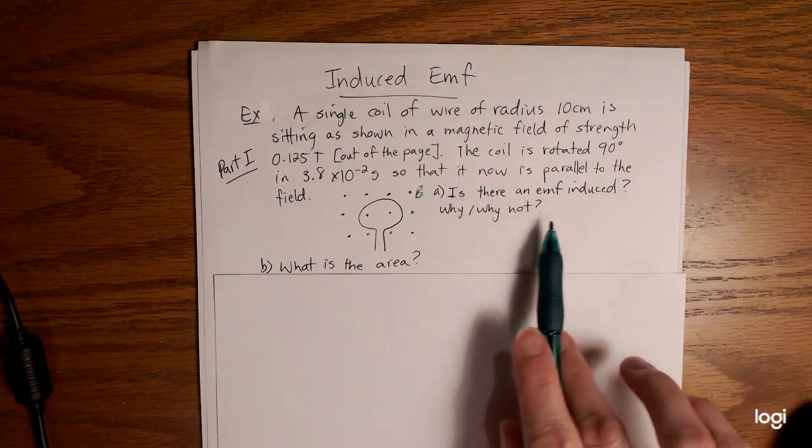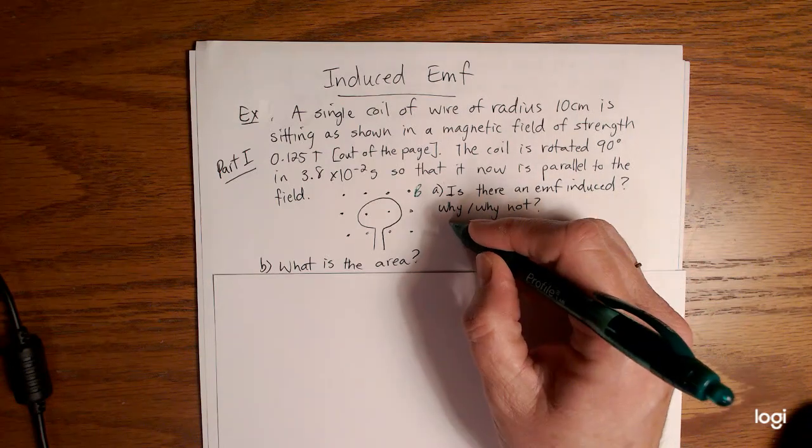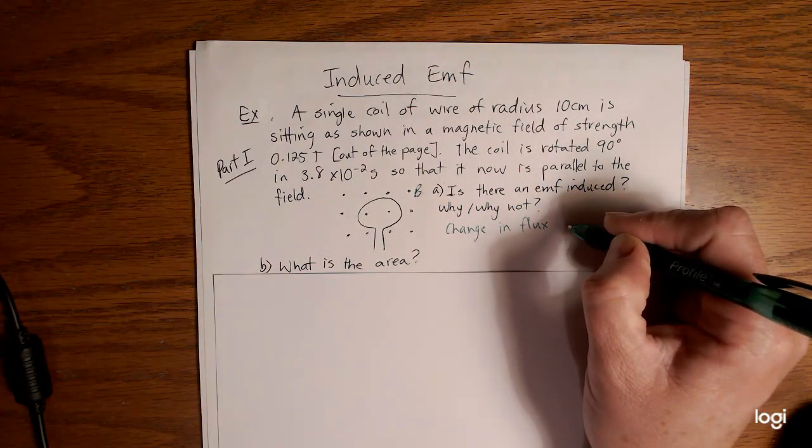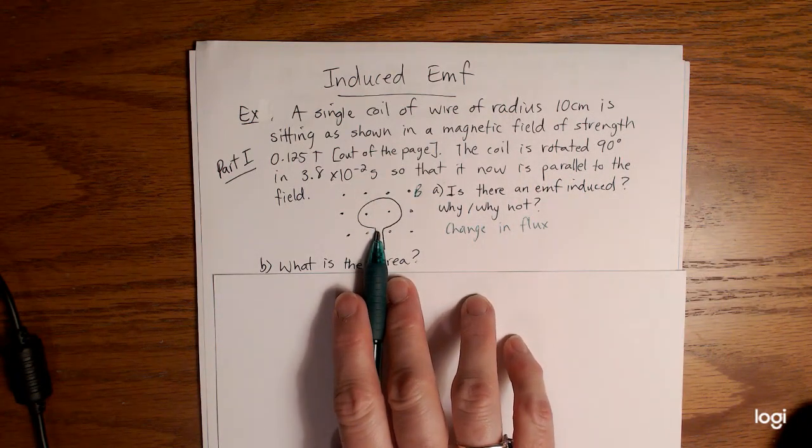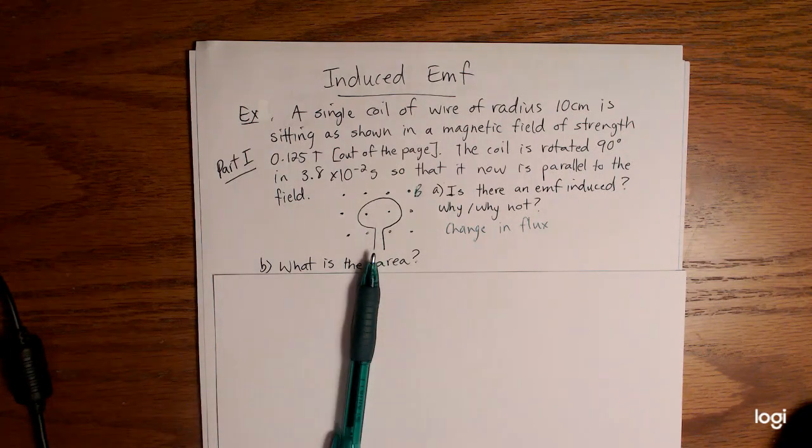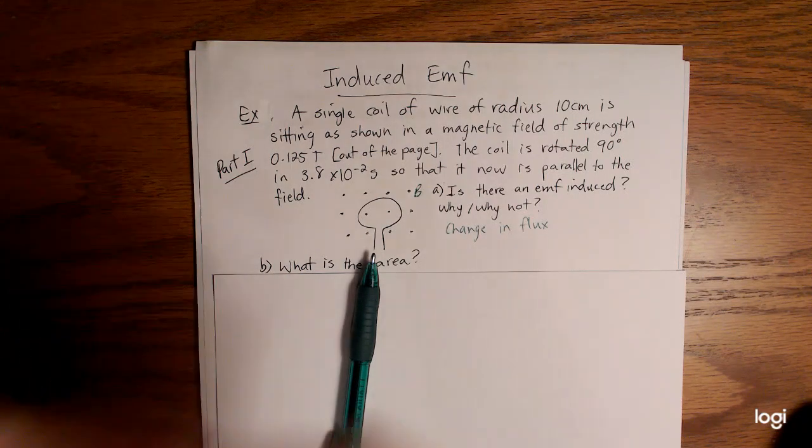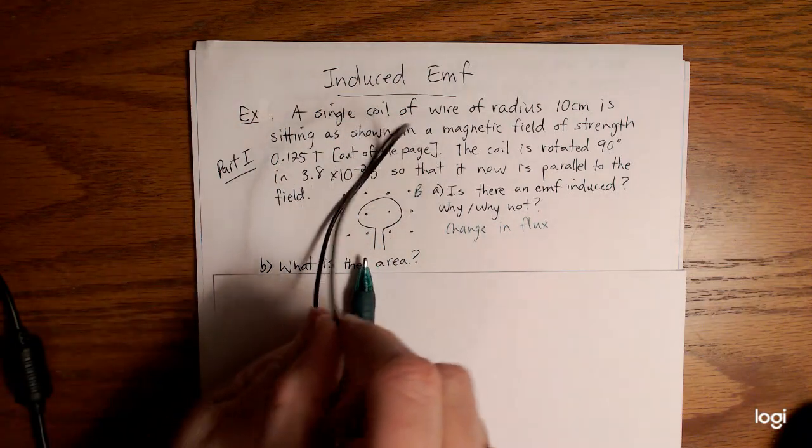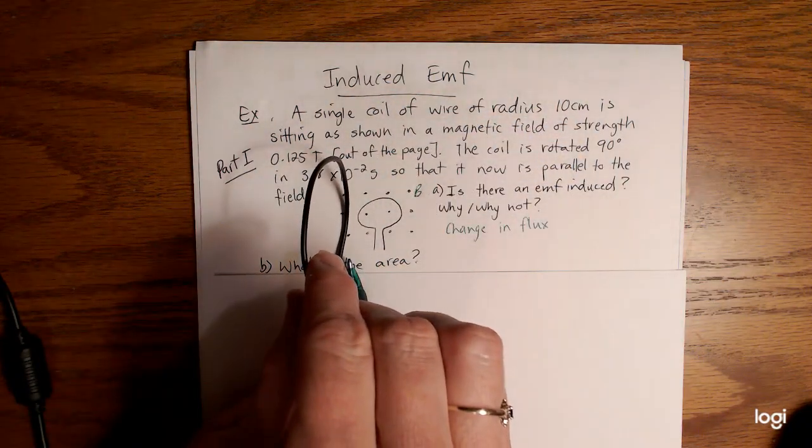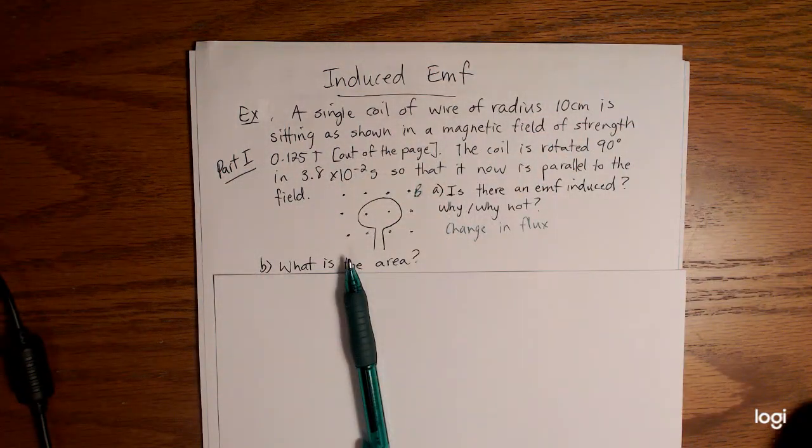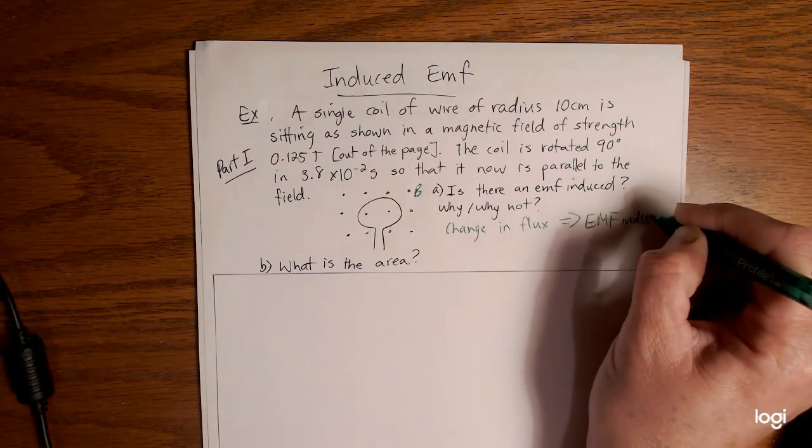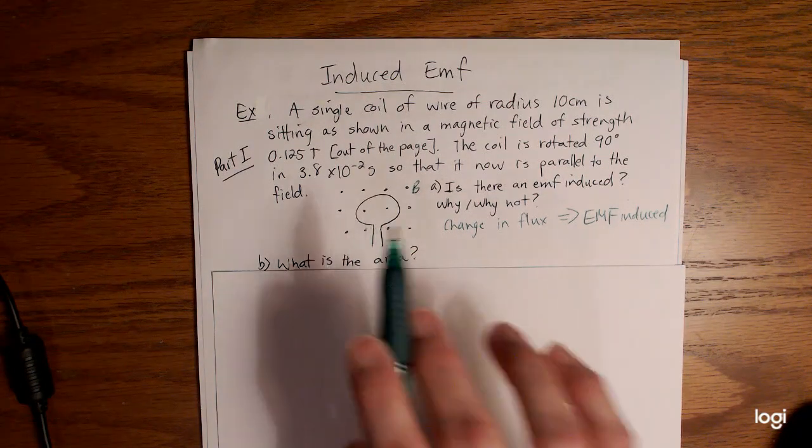Is there an EMF induced? Why or why not? If there is any kind of a change, we need to have a change in the magnetic field, so change in flux. If it was sitting like that and then I rotated it this way, now that coil is sitting parallel to the field. Now the flux lines are just going straight past it. So we're going to see a change in the flux. If there's a change in the flux, then there is an EMF induced.